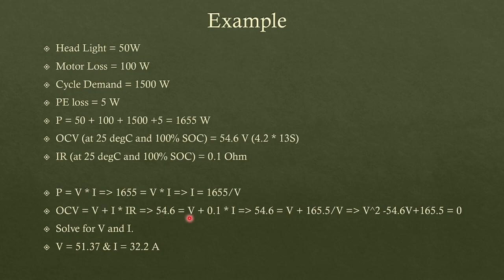54.6 equals V plus 0.1I, which gives the following quadratic relation after plugging in this relation from the first equation. You can easily solve for this quadratic equation and get the roots. The one which is reasonable root you can take it. In this case, V comes out to be 51.37, and then you plug this value in this equation back to get I, which gives you 32.2 amps. So this is how electrical equivalent model, in this case the resistor model, works in the background based on the electrical equations. So hope this helps, thanks for listening.